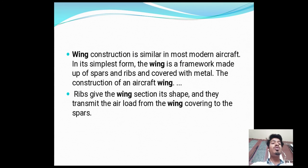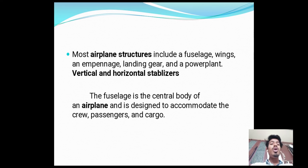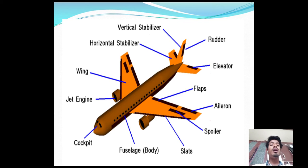Wing construction is similar in most modern aircraft. In its simplest form, the wing is a framework made up of spars and ribs covered with metal. Ribs give the wing section its shape and transmit the air load from the wing covering to the spars. Most airplane structures include a fuselage, wings, empennage, landing gear, powerplant, and vertical and horizontal stabilizers. The fuselage is the central body of the airplane, designed to accommodate the crew, passengers, and cargo.